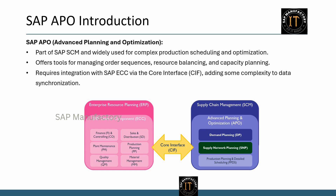Let's start with a quick introduction to SAP APO and S4 HANA embedded PPDS. First, SAP APO is a well-established tool in the SAP landscape, primarily used with the SAP SCM suite. APO PPDS has been a popular choice for managing complex production scheduling, optimizing order sequences, and balancing resources in high-demand manufacturing settings. However, APO requires integration with SAP ECC, which often adds complexity through the core interface to ensure data synchronization.